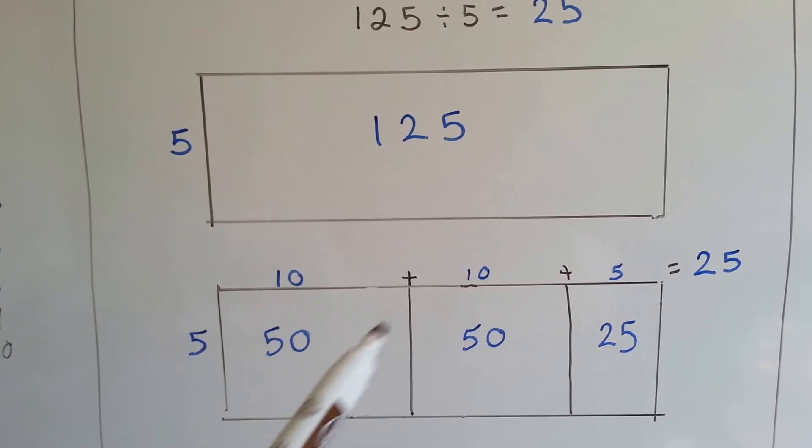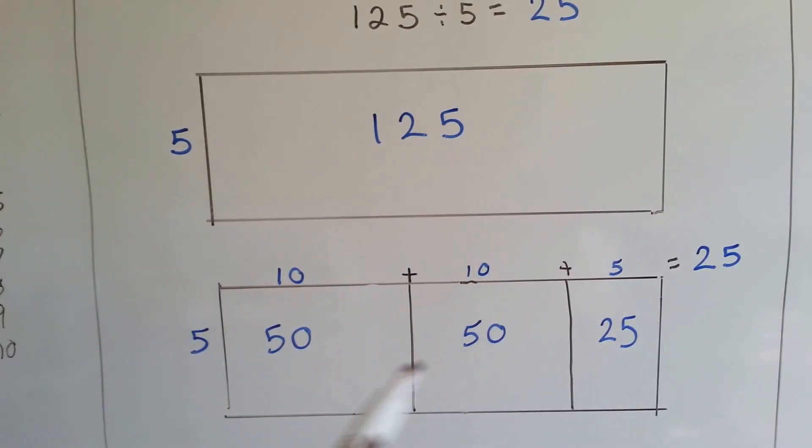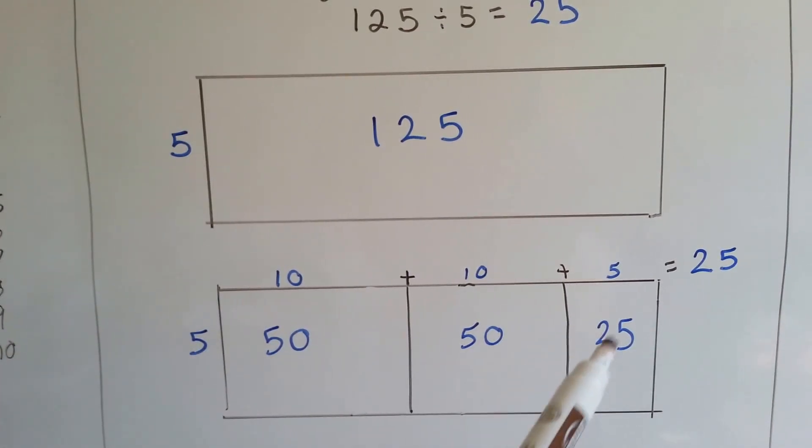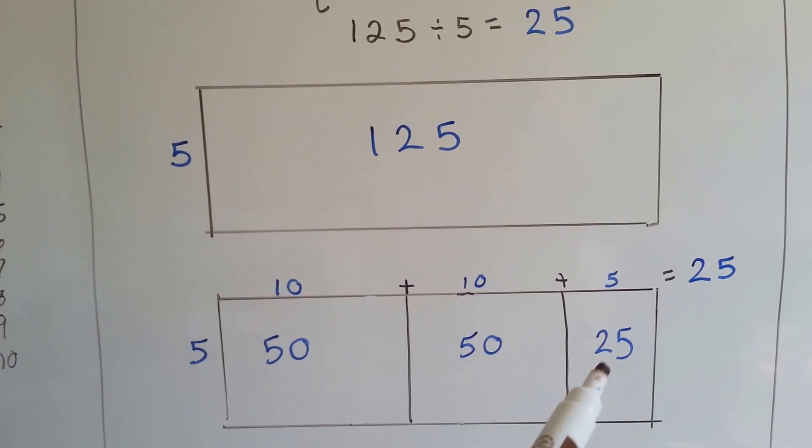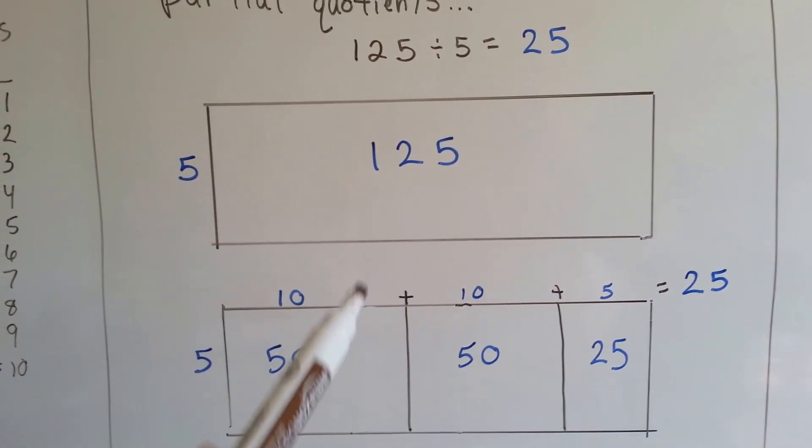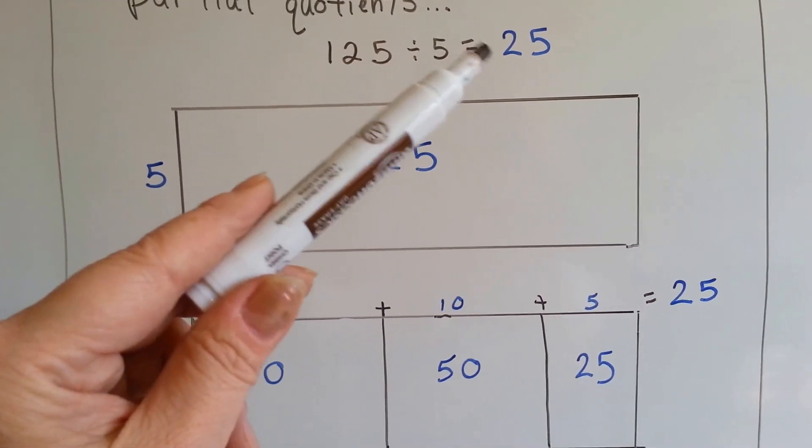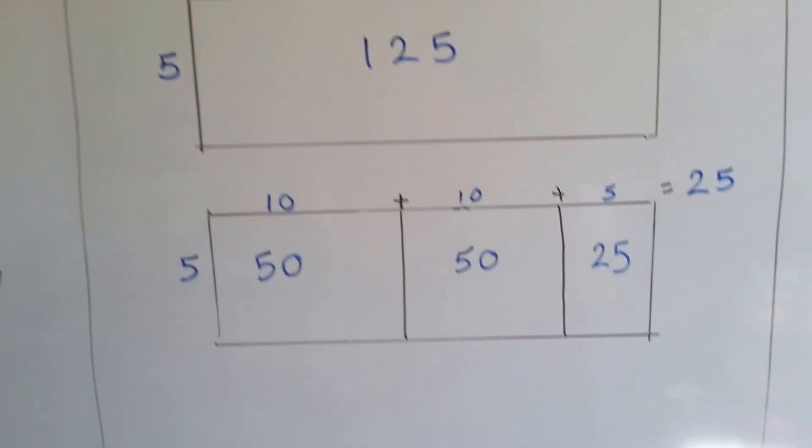5 times 10 is 50. Another 5 times 10 is another 50. That's 100. And then 5 times 5 is the 25. We add up these and we know that 125 divided by 5 is 25.